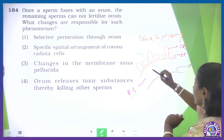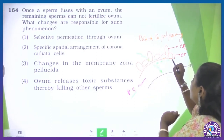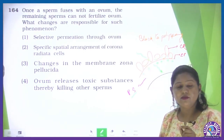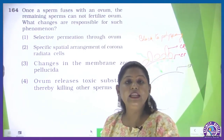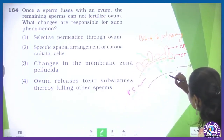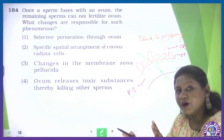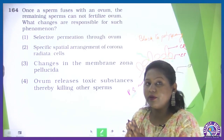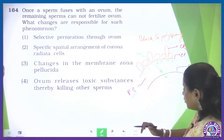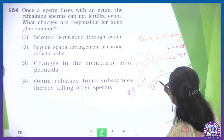Then, one event occurs — that is the first block to polyspermy. When the sperm crosses the zona pellucida, it completely depolarizes — the inner charge becomes positive and the outer charge becomes negative. But this is a very short-lived process. In the meantime, the sperm's nucleus enters inside through the cell membrane.